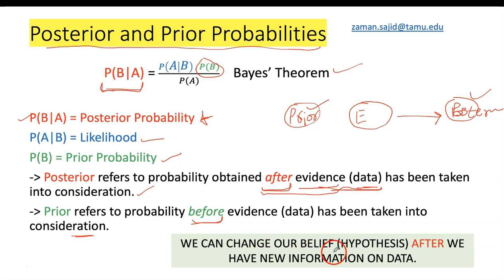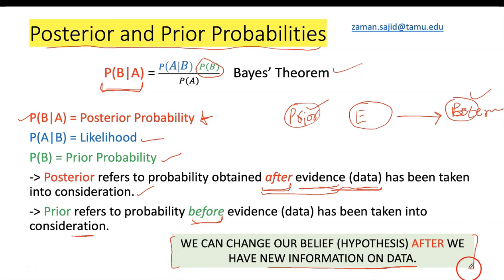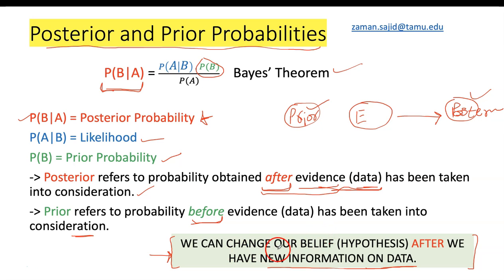The prior probability is something which exists before introducing evidence into our system. We can say that we can change our belief or hypothesis after we have new information or data. This statement is one of the most important in Bayesian network analysis, and it is the reason Bayesian networks are being used in too many fields — engineering, medical, everywhere — because it helps to update our belief after new information is available.